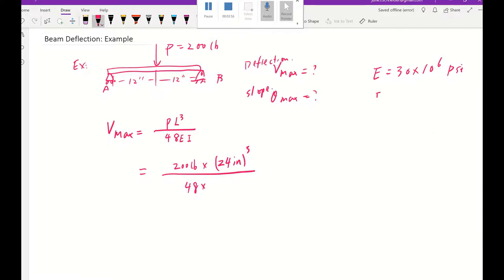Then in that situation, we're going to write down our I also. If this I, we don't need to solve it, it's already given to us. If it's 0.05, for example, inch to the power of 4. We're going to put our E here, that's 30 times 10 to the power of 6 psi.